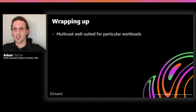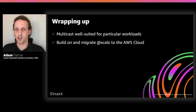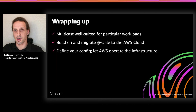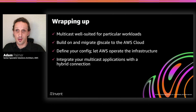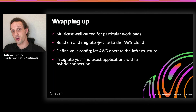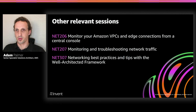Wrapping up, we've seen that multicast is well suited for particular workloads — perhaps those sensitive to network saturation when sending large pieces of information many times, or bespoke financial applications that could benefit from multicast. We've seen the inherent benefits of building on and migrating at scale to AWS around cost and speed. Multicast in itself is a managed service — all you need to do is define the configuration and allow AWS to operate that infrastructure for you. We've also seen that you can integrate a multicast deployment on AWS and extend it to existing locations using hybrid integration techniques, and this is an area we'd like to offer natively on our roadmap. As a customer, you can get started right now in the console, with support for CloudFormation and API support. Thank you very much for watching.